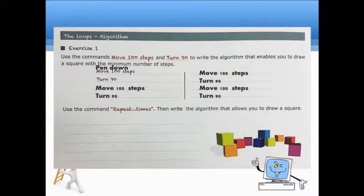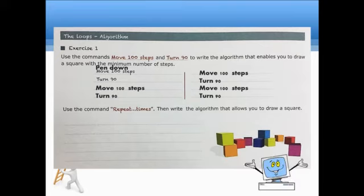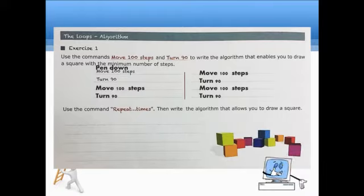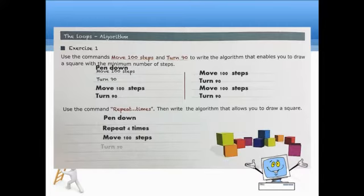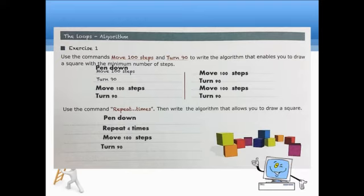Now, let's proceed to the next one. It says use the command repeat times, then write the algorithm that allows you to draw a square. So, this time we will be using the command repeat times. So, what will be the first step to use? First is pen down. Second to it will be repeat 4 times. Then, under repeat 4 times, we have move 100 steps and turn 90. So, if you will notice, we have to repeat step 3 and 4 four times for us to draw a square. So, this one is shorter than the previous one.